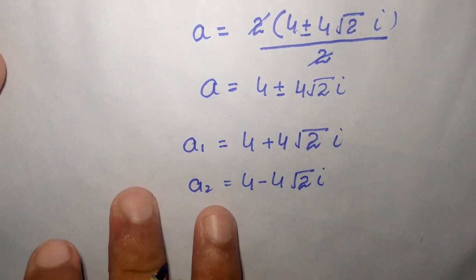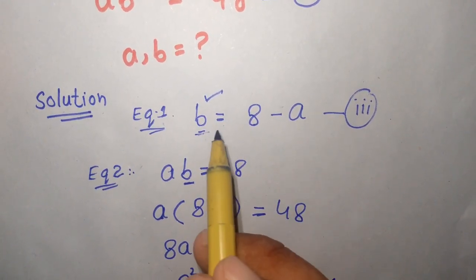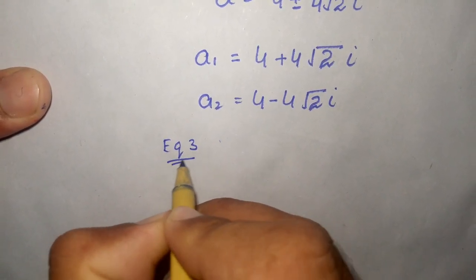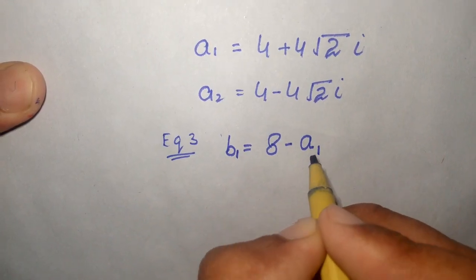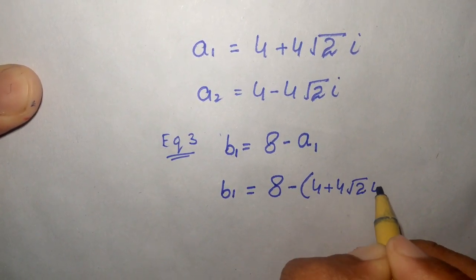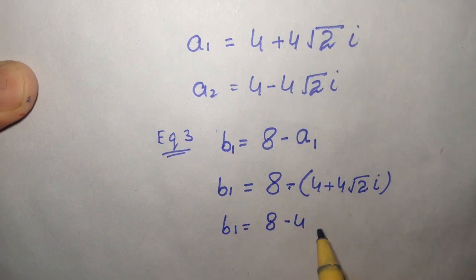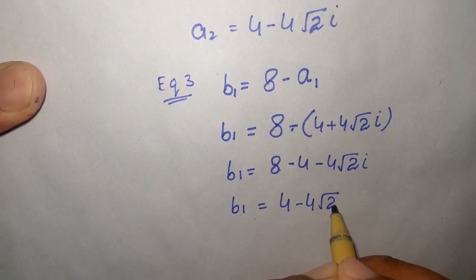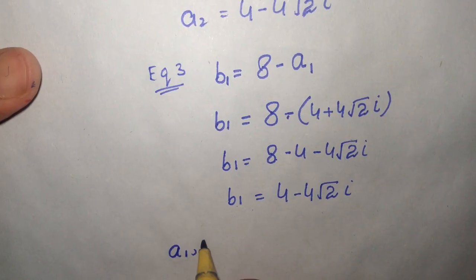Now we find the value of b from equation 3, that is b equals 8 minus a. To find b1, we substitute a1: b1 equals 8 minus a1, which is 8 minus (4 plus 4 square root of 2 i). So b1 equals 8 minus 4 minus 4 square root of 2 i, which gives b1 equals 4 minus 4 square root of 2 i.